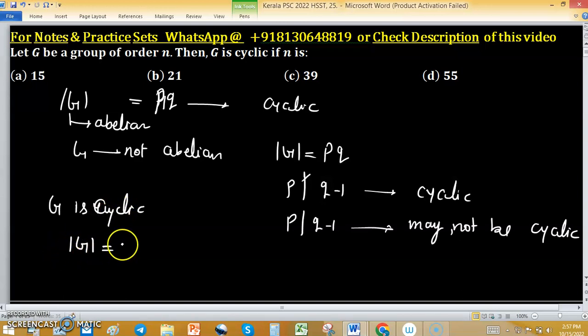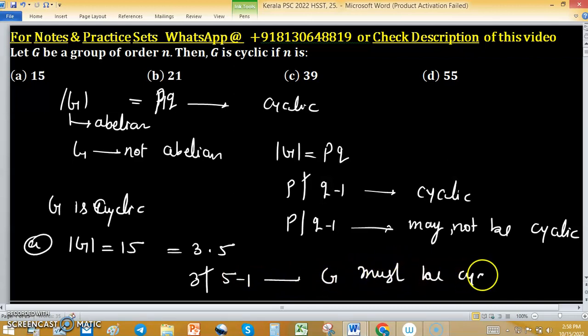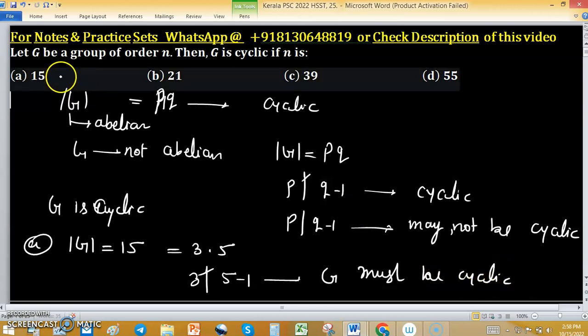Order of group G equals 15, this is option A. Then we can write 3 into 5. 3 doesn't divide 5-1. In this case G must be cyclic, so option A is true.